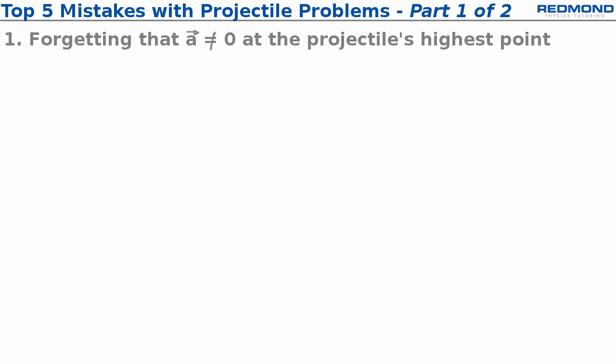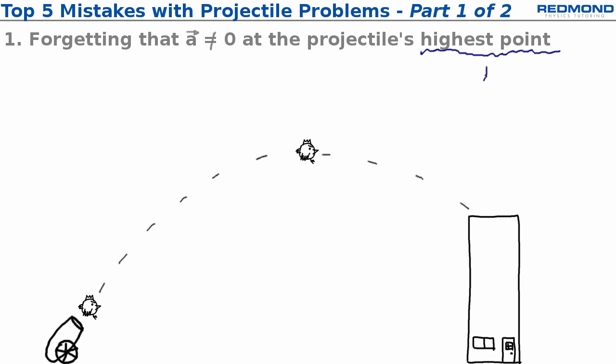Mistake number one is forgetting that the acceleration is not zero at the projectile's highest point. Here's an example in which we plan to shoot a raging chicken onto the edge of a nearby rooftop with a nice parabolic trajectory like this.